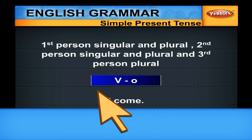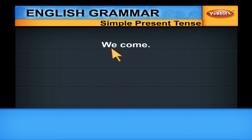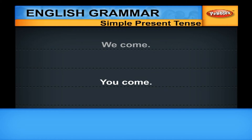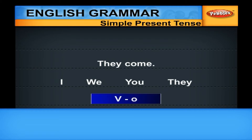For example: I COME — I is first person singular. WE COME — WE is first person plural. YOU COME — YOU is second person singular and plural. THEY COME — THEY is third person plural. In other words, when we use I, WE, YOU, THEY, we use the V0 form.